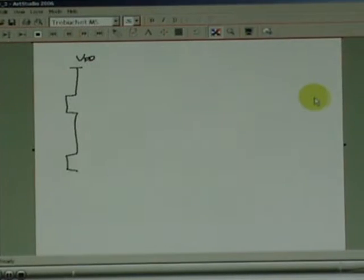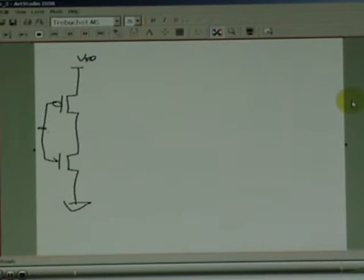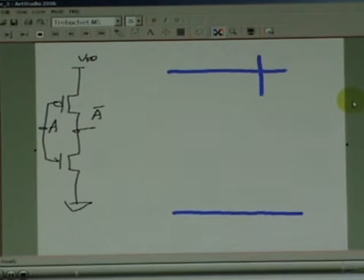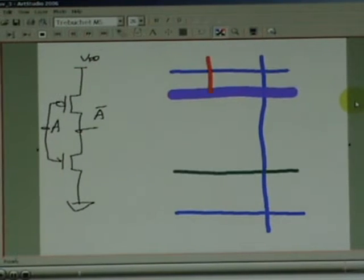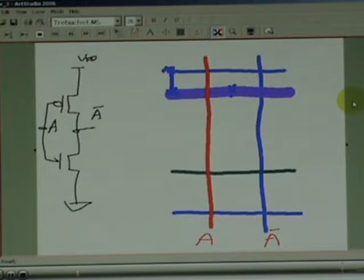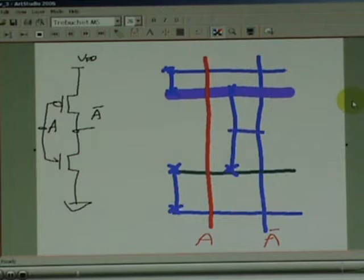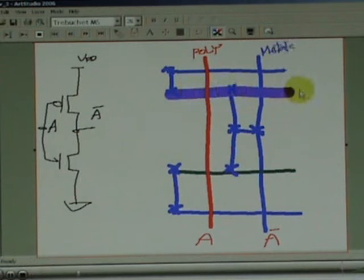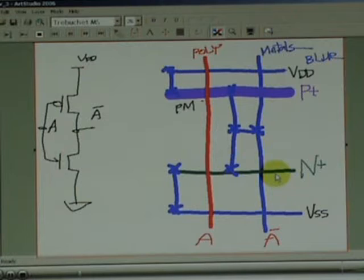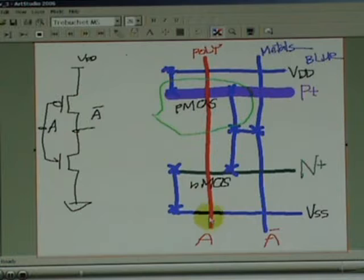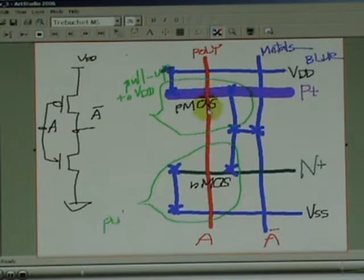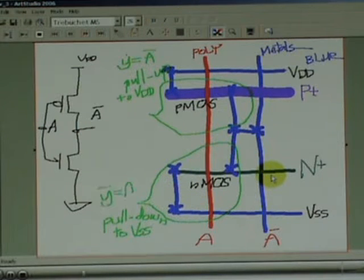Now let us see how to draw the stick diagram. We use blue lines for metal. This heavier line represents P-plus diffusion, and the green one represents N-plus diffusion. The polysilicon intersection with P-plus creates a PMOS transistor, while the intersection of polysilicon with N-plus creates an NMOS transistor.